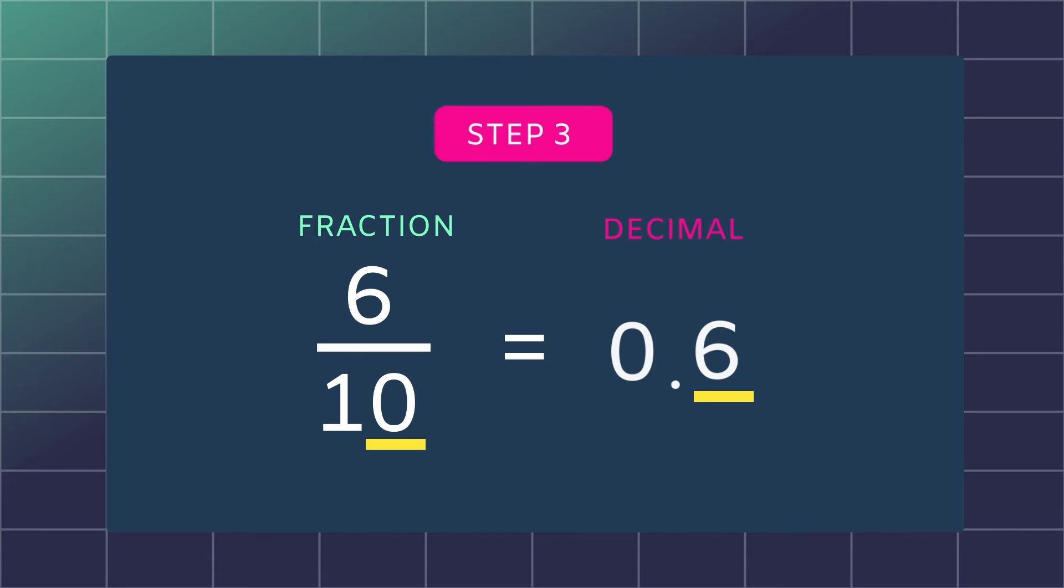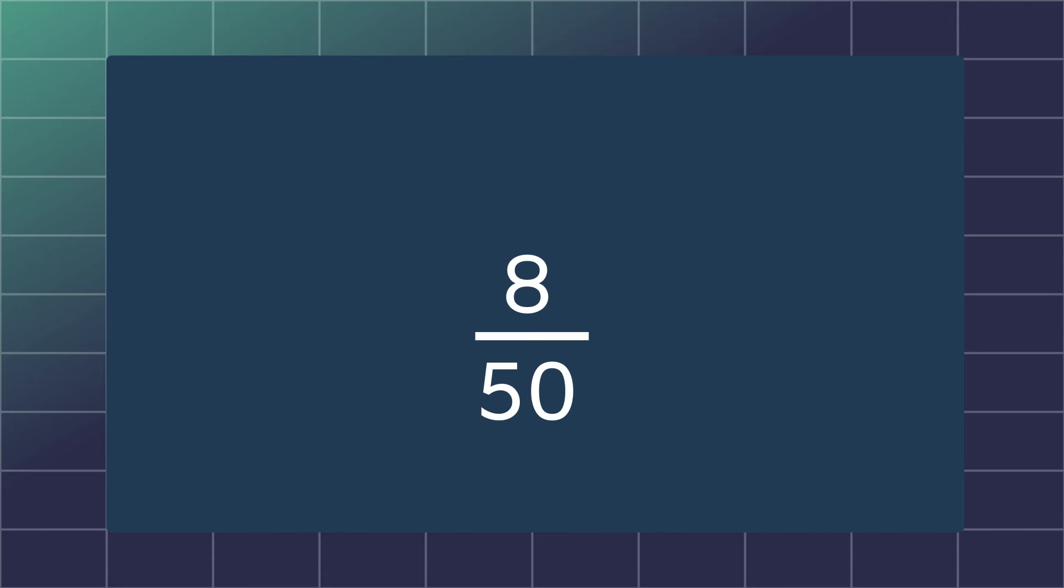Here is another example to try. 8 fiftieths. Remember the steps. Step 1: Change the denominator to a base 10 by multiplying 50 by 2.